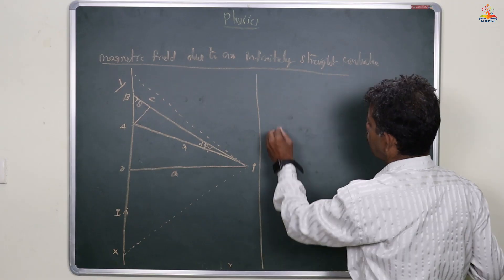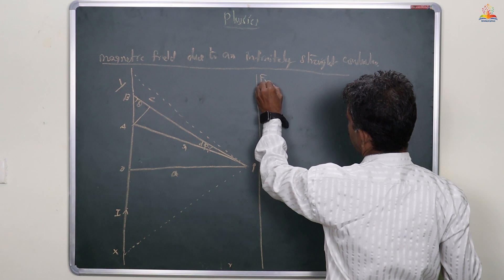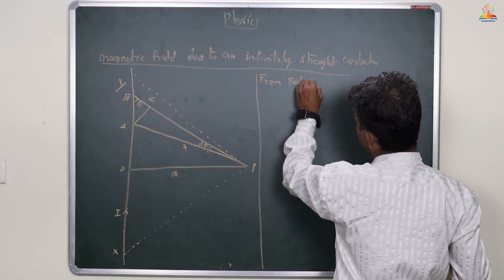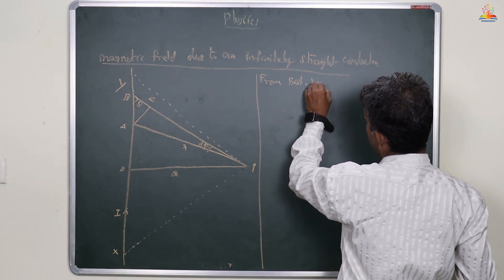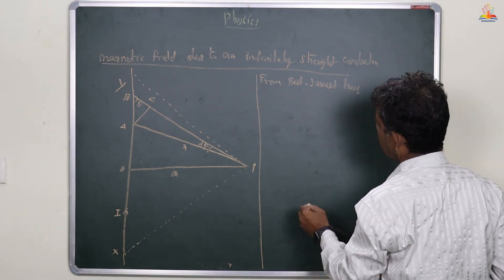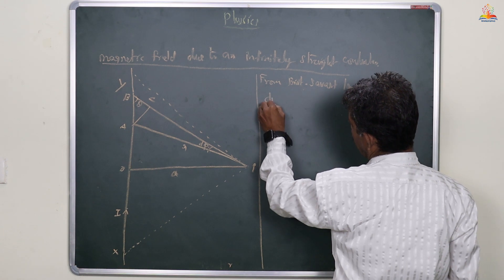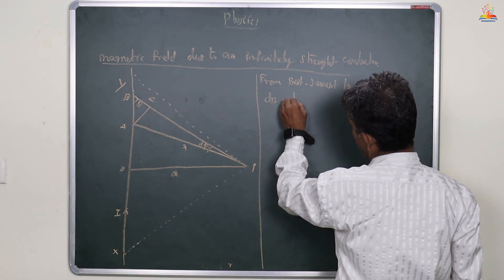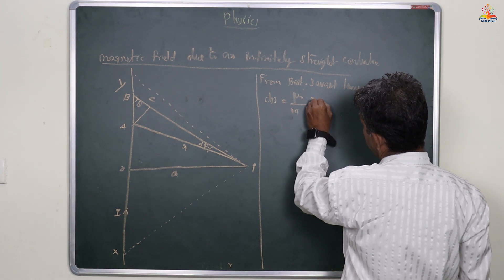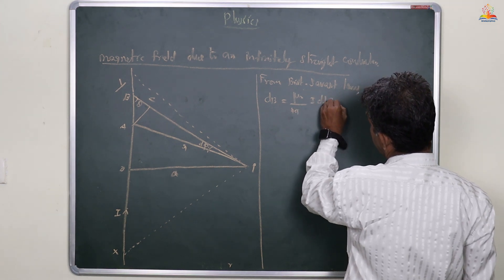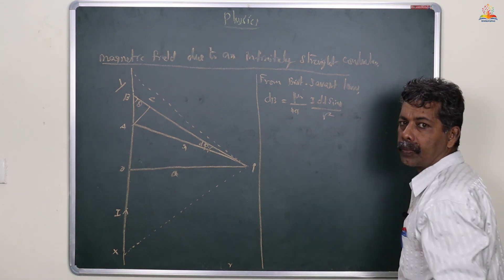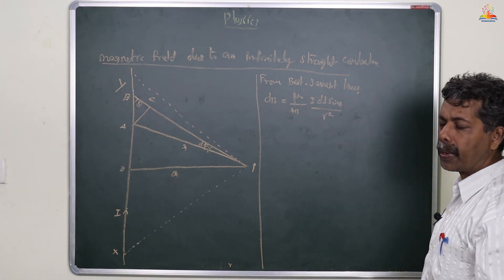From the Biot-Savart Law: dB is equal to μ₀ by 4π times I into dl sinθ divided by r squared.